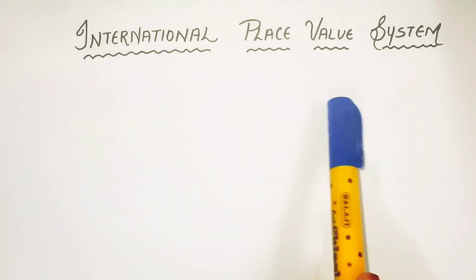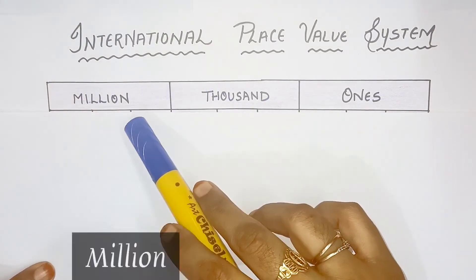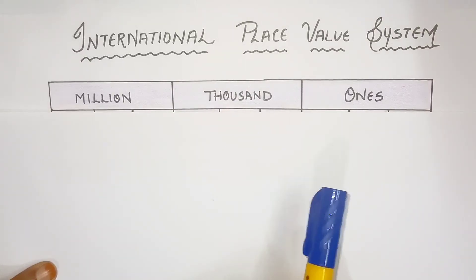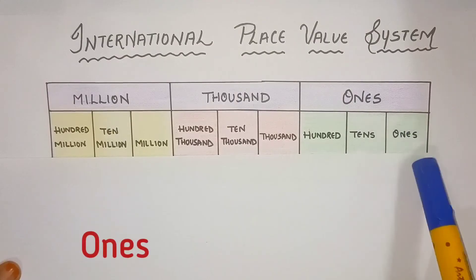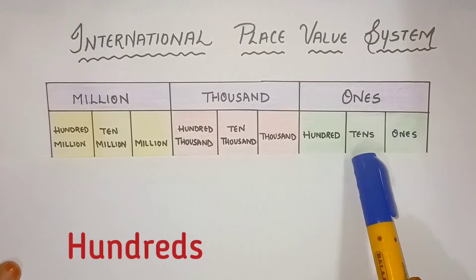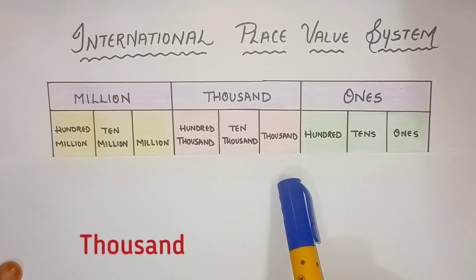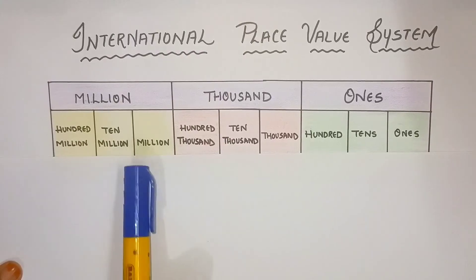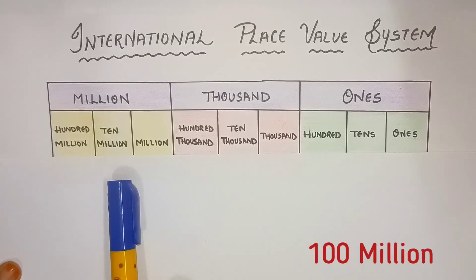In International Place Value System, we are having 3 periods: Ones, Thousand and Millions. Now, every period, we will divide in 3 places. This period will be divided into Ones, Tens, Hundreds, Thousand, Ten Thousand, Hundred Thousand. And Million, again, we will divide in 3 places: Million, Ten Million and Hundred Million.